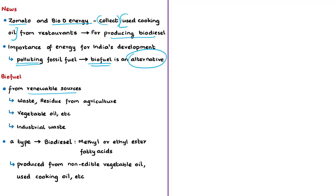Biofuels are produced from wastes and residues from agriculture and forestry, from vegetable oils and other non-edible oils, and from the biodegradable fraction of industrial and municipal wastes. They can be used in place of or blended with diesel, petrol, or other fossil fuels for transport and other applications. Biodiesel is a methyl or ethyl ester of fatty acids produced from non-edible vegetable oils, acid oil, used cooking oil, or animal fat.